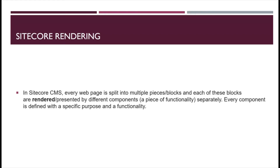Sitecore rendering — in a CMS, everything is depicted as a piece of a block, and each block is called a component. Rendering means we are creating a new component. Each new component has certain functionality that is defined on the view side, controller side, or even the item side. Defining a component is called rendering, and in that component we perform certain tasks as specified.